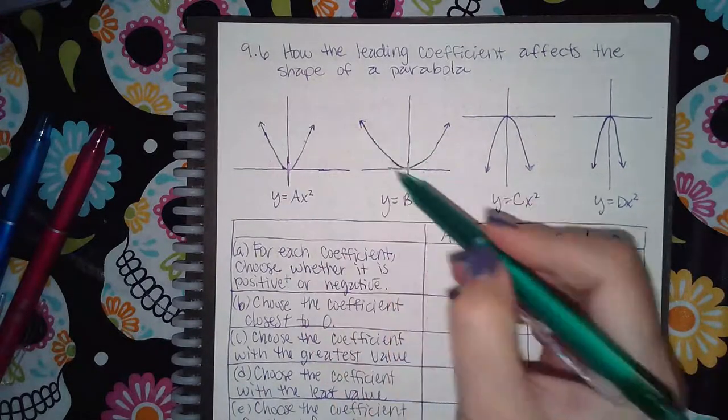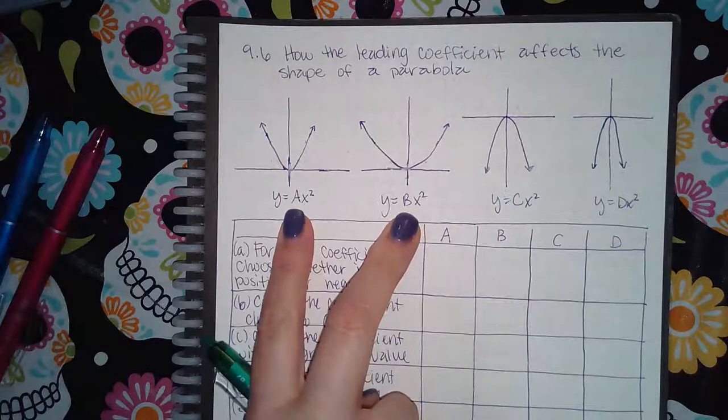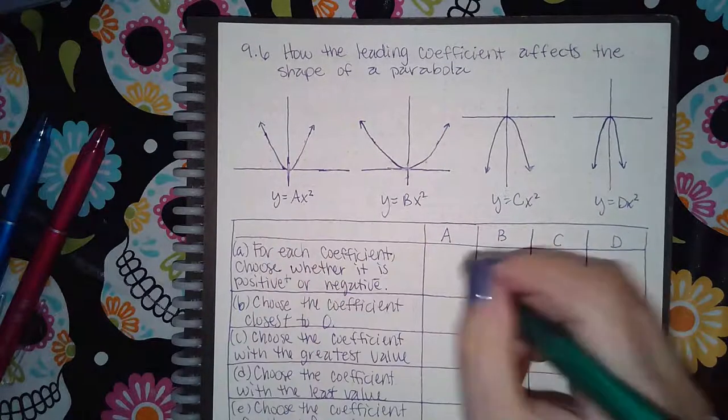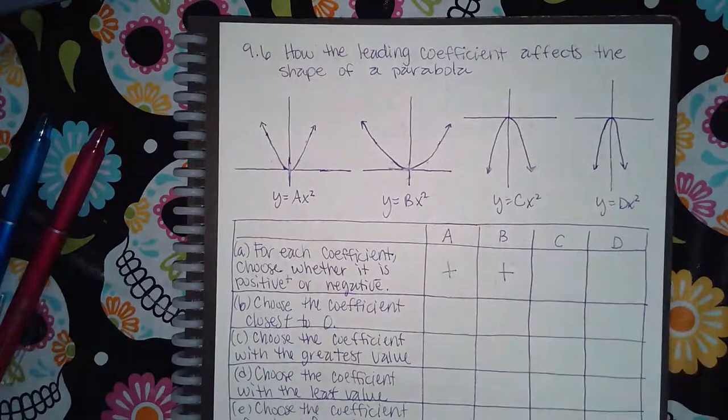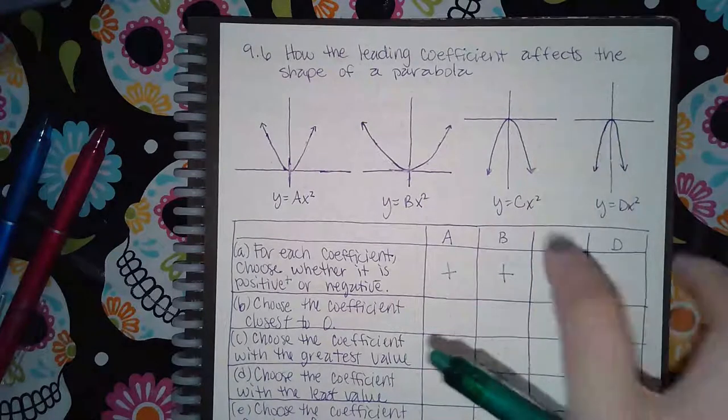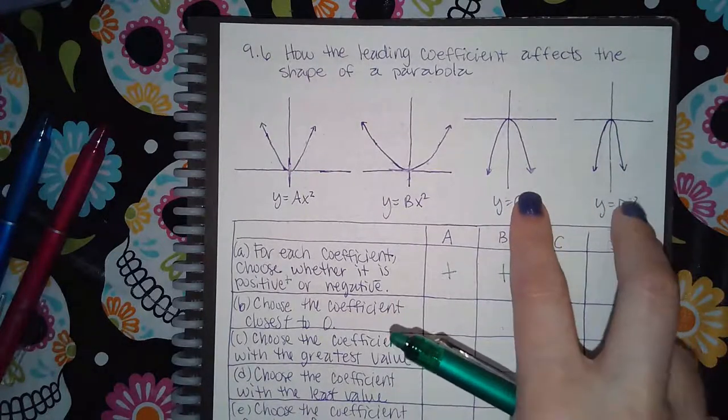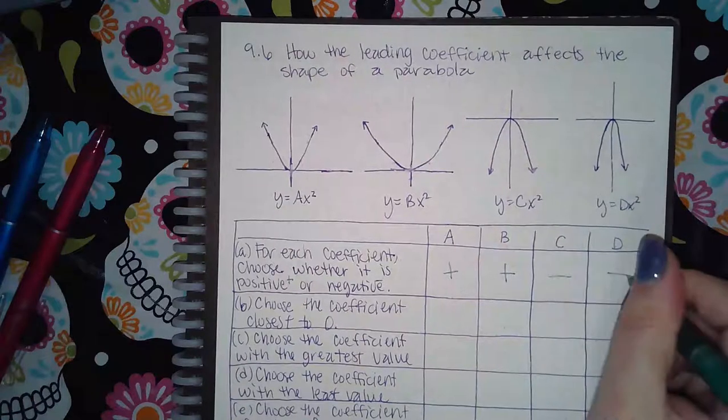Since these two are both opening up, then for these two coefficients A and B it should be positive. And since these two graphs are opening downward, then that means these two coefficients need to be negative. So those two would have to be negative.